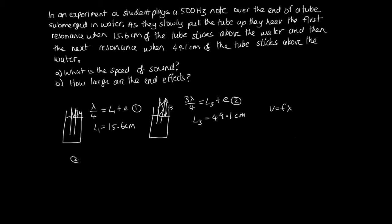And what we'll do is we'll do equation 2 minus equation 1. So that gives us 3 lambda over 4 minus lambda over 4, and on the right hand side we've got L3 plus E minus L1 plus E. Now the nice thing about doing it this way is that these E's, the end corrections, are going to cancel out. So 3 quarters of a wavelength minus a quarter of a wavelength gives us half a wavelength. And the E's cancel out and this is L3 minus L1. And we've got numbers for these guys which we can substitute in now. So 49.1 minus 15.6, and solving that we end up with 33.5 centimeters.